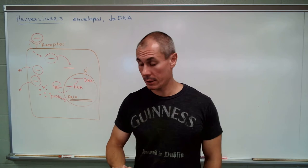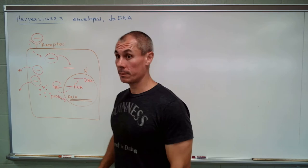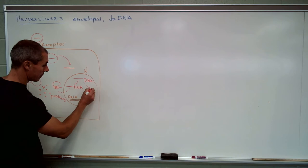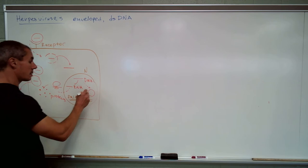What is interesting about herpes viruses is they can establish what is called latency. When the immune system starts to suppress the virus infection, the virus enters a state of latency where its DNA circularizes and exists in what is called the episomal form.